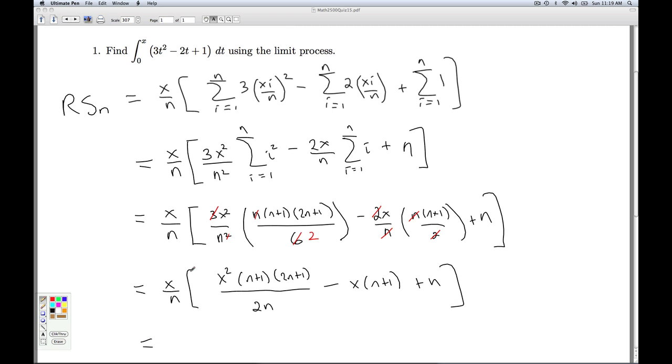Last but not least, I multiply the x over n through. So I'm going to get x cubed times n plus 1 times 2n plus 1, all divided by 2n squared, minus x squared n plus 1 over n, plus x.